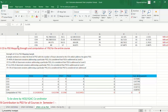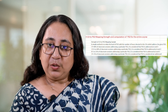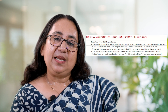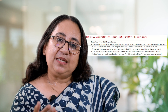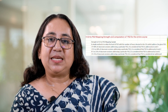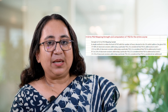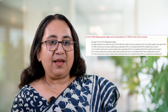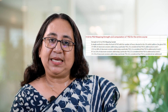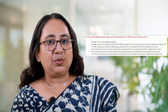Here we create a strength matrix based on CO-PSO mapping using the following rule: if greater than 40% of classroom sessions address a particular PSO, it is considered that PSO is addressed at level 3. If 25 to 40% of classroom sessions address a particular PSO, it is considered that PSO is addressed at level 2.